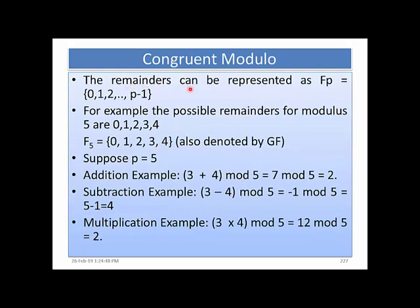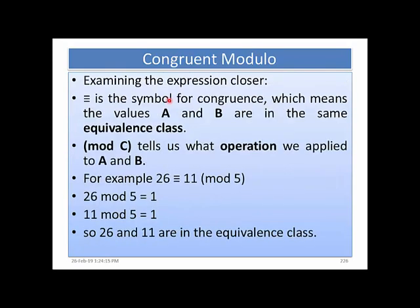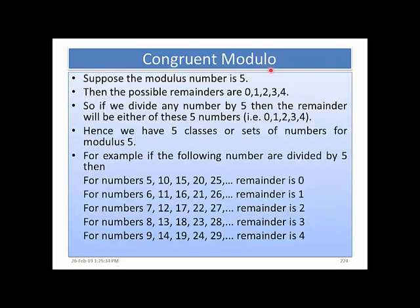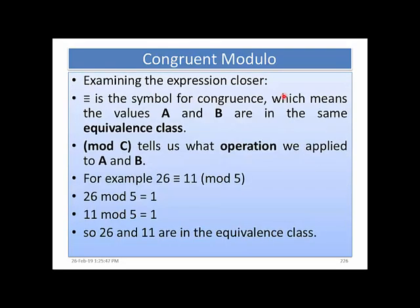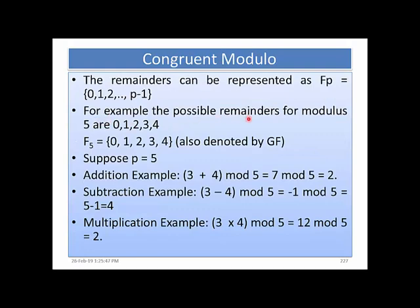The remainder can be represented as F(p) = {0, 1, 2, ..., p-1}, as we have seen before. For example, the possible remainders modulo 5 are {0, 1, 2, 3, 4}, so F(5) = {0, 1, 2, 3, 4}, since 5 minus 1 equals 4 is the maximum value.